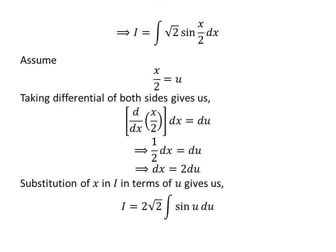Substituting x in I by our assumed value, now the integration I has become 2 times square root of 2 times integral of sine of u with respect to u. I have taken 2 times square root of 2 out of the integral as it is a constant.